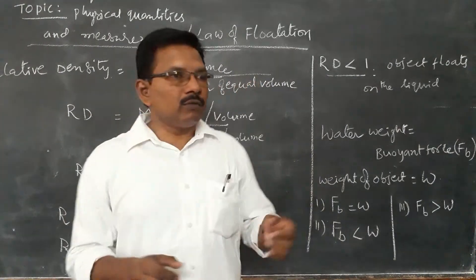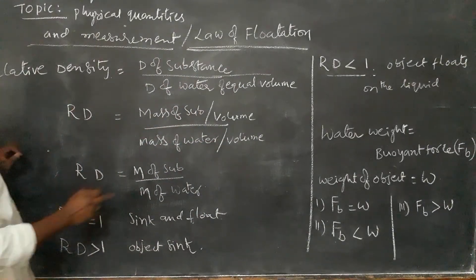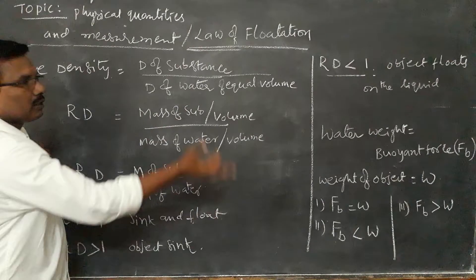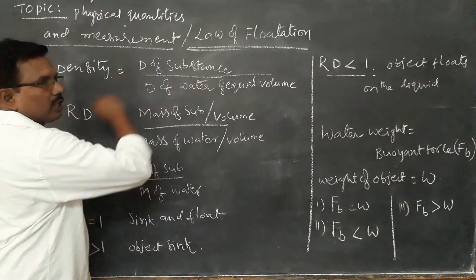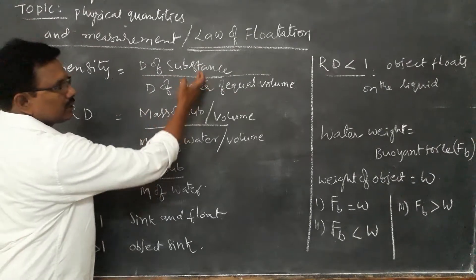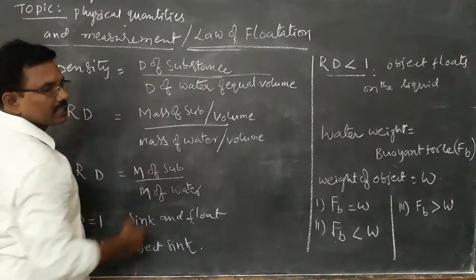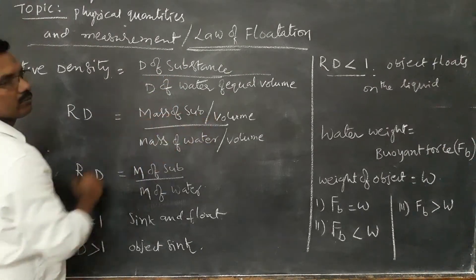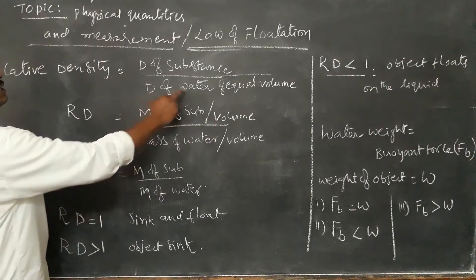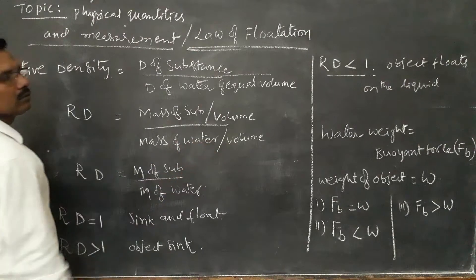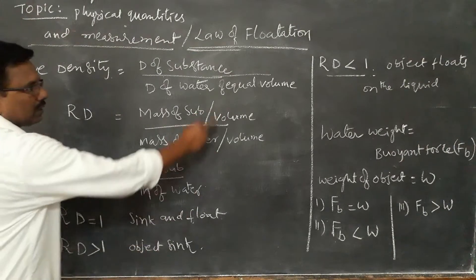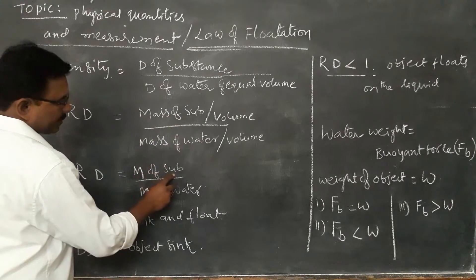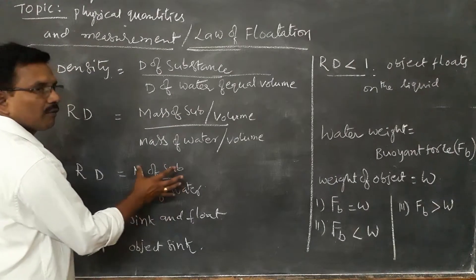As per the definition, we can write the formula for relative density. Relative density is the ratio of the density of the substance to the density of water of equal volume — both must have the same volume. Density is mass divided by volume, so density of the substance is mass of the substance divided by its volume, and density of water is mass of water divided by volume of water. Since both volumes are the same, we can cancel the denominators.